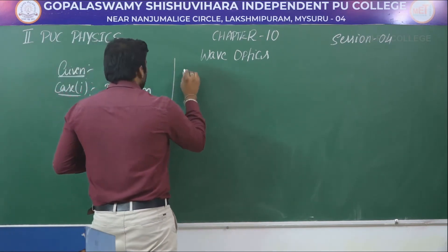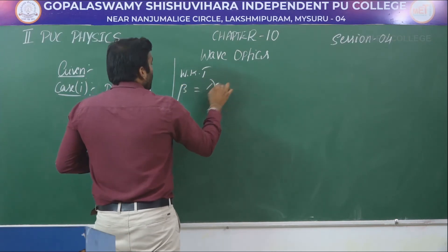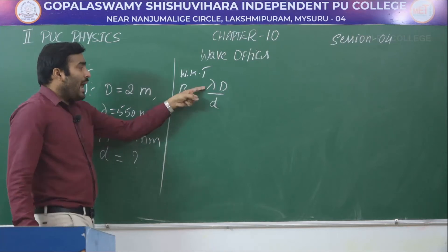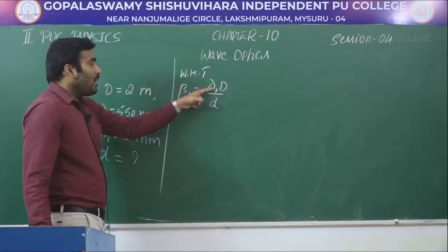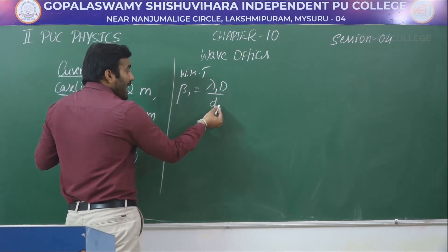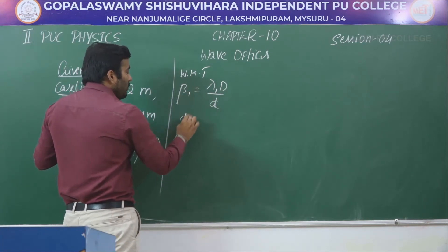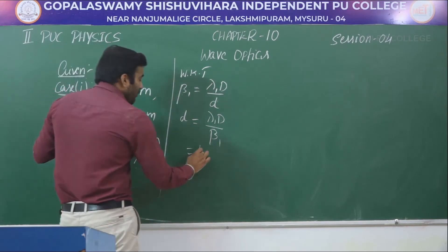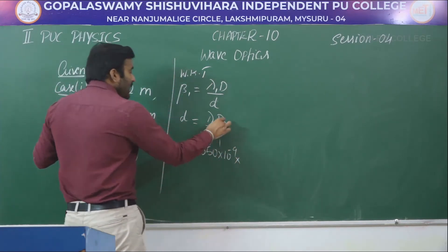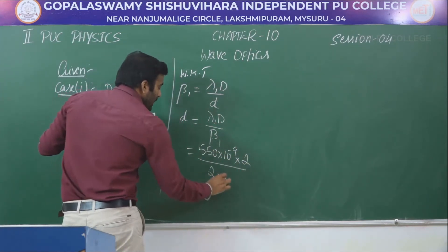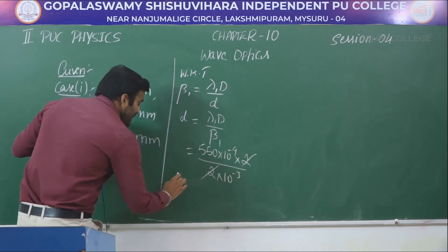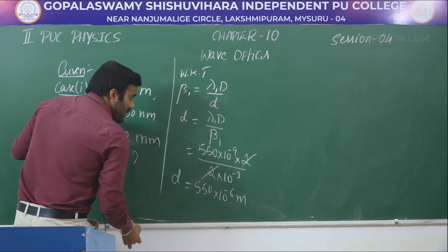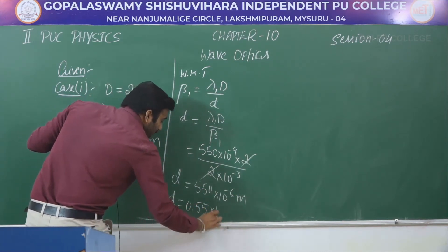Using beta₁ = lambda₁ D / d, rearranging: d = lambda₁ D / beta₁ = (550 × 10⁻⁹ × 2) / (2 × 10⁻³). The 2s cancel, giving d = 550 × 10⁻⁶ meter. Shifting the decimal, d = 0.55 × 10⁻³ meter, which is 0.55 millimeter.